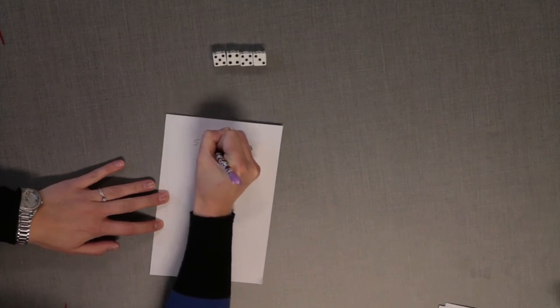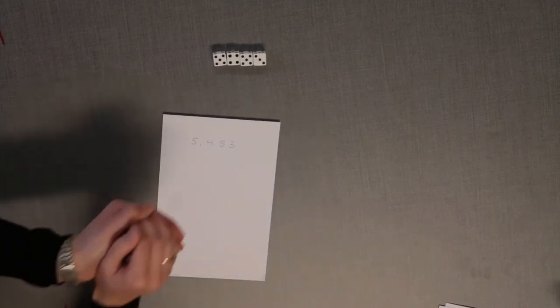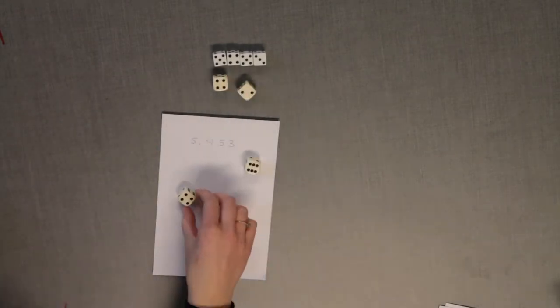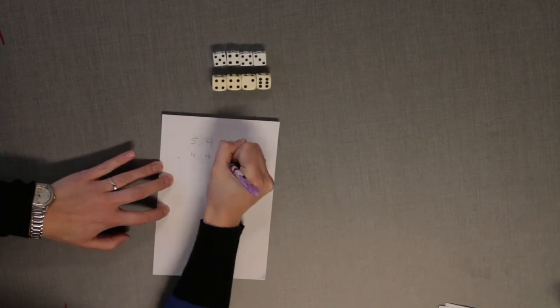After the ideal number is made, each player will roll their dice and create a four-digit number that is as close to the ideal number as possible. You will then find the difference between the ideal number and your number.